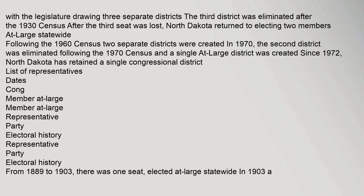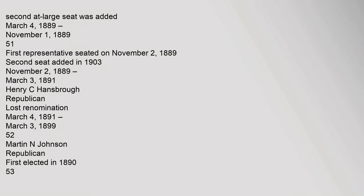From 1889 to 1903, there was one seat elected at-large statewide. In 1903, a second at-large seat was added. The first representative was seated on November 2, 1889.